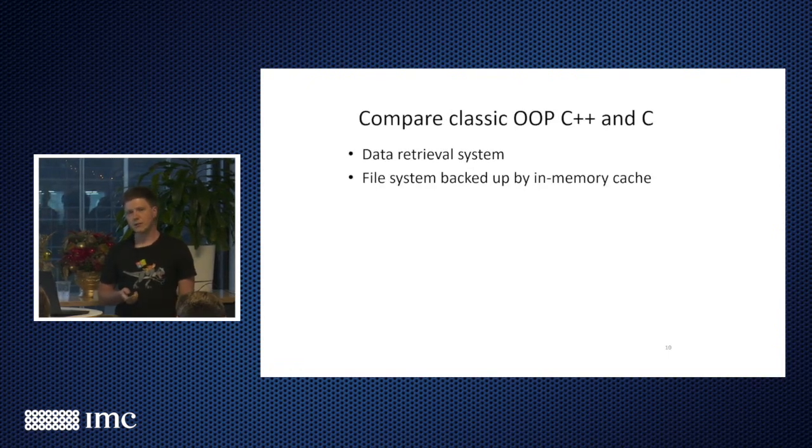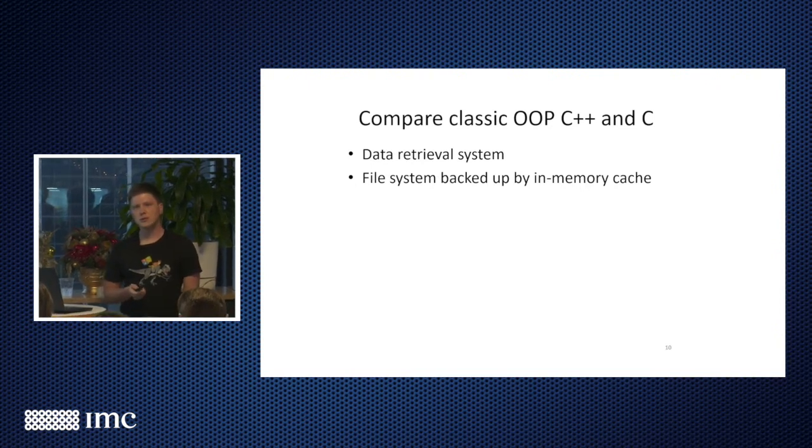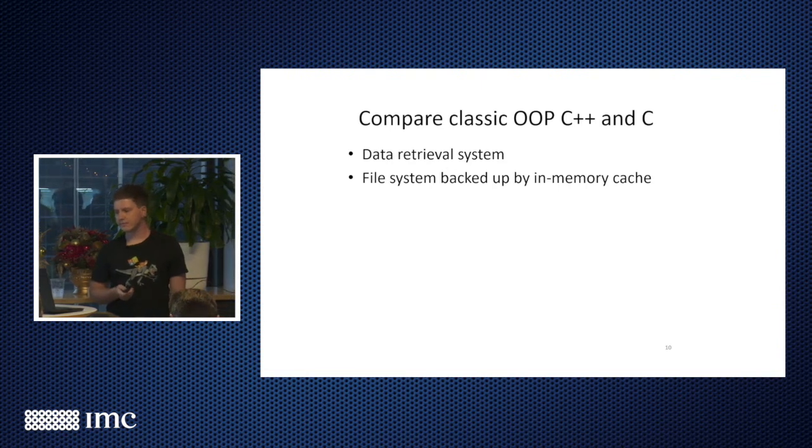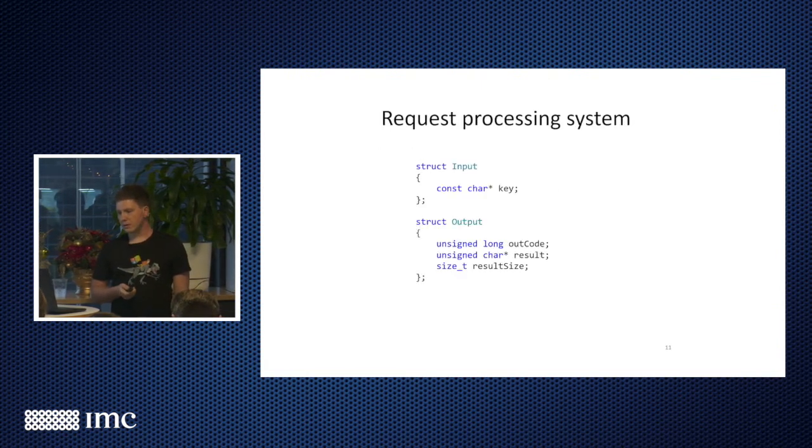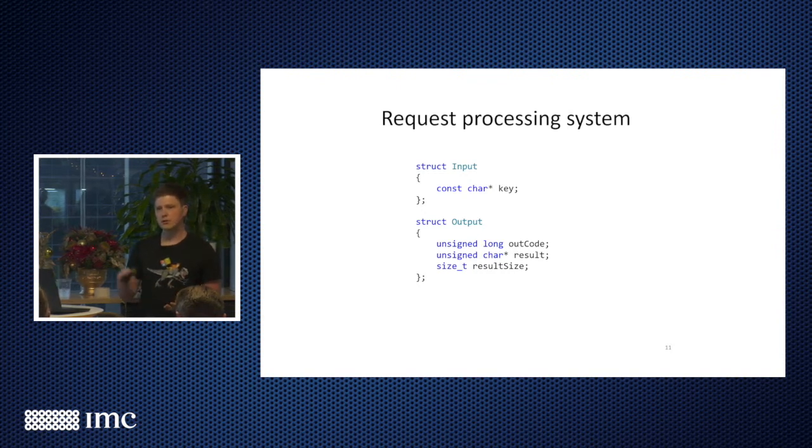So let's compare how we can do this in C++ and in C, how readability and searchability works. I'll go with simple data retrieval system. That could be image cache, could be basically retrieving data blob. There are many ways you can write it. I'll talk about classic object-oriented C++ programming, because in C++ you can write in many ways. You can get as close to C as you want, you can get to very abstract level, and everything in between. C kind of forces you to write in a specific way.